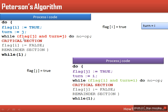Now if we look at the condition for process i: flag[j] is true, but what is the turn value? Turn value is i, because process j updated this value last. So turn is not equal to j — this condition is false. When this condition is false, execution continues and process i enters its critical section. The red color indicates the condition is false and process i starts executing its critical section.